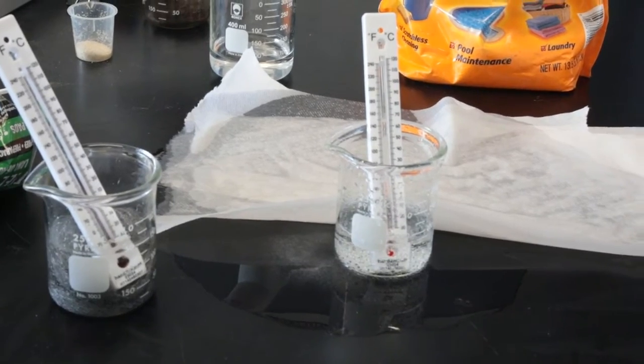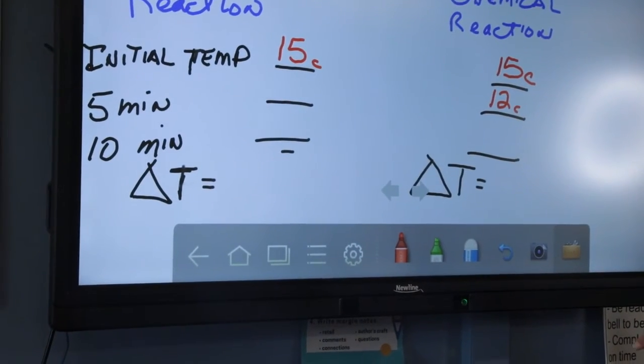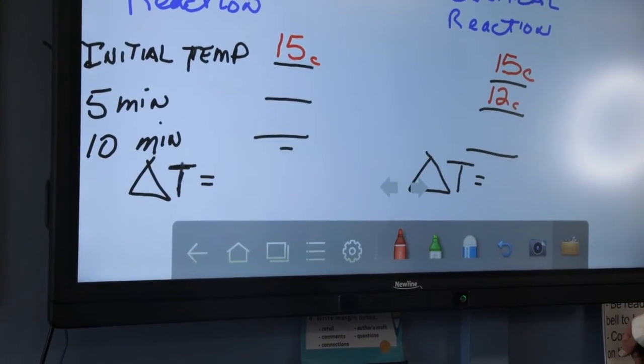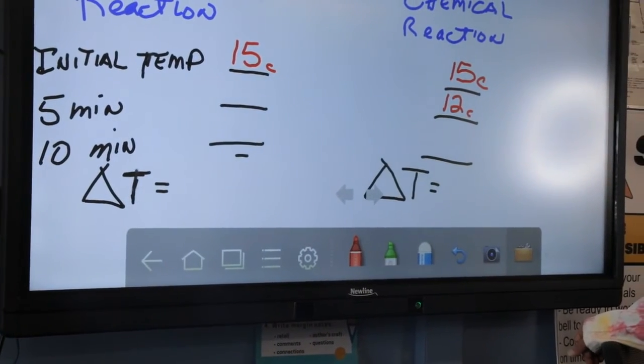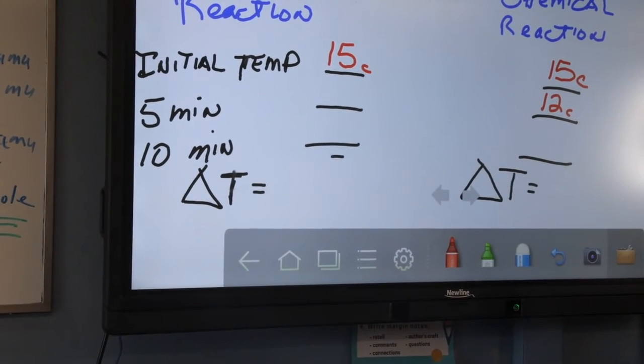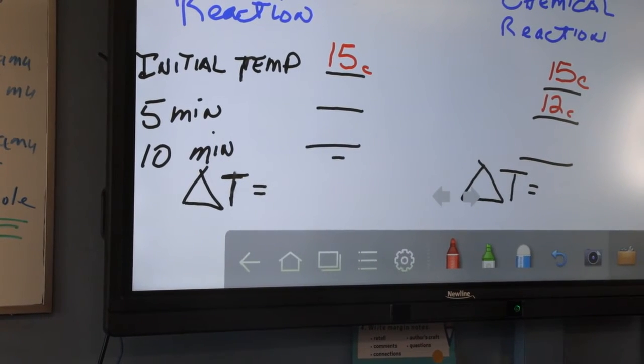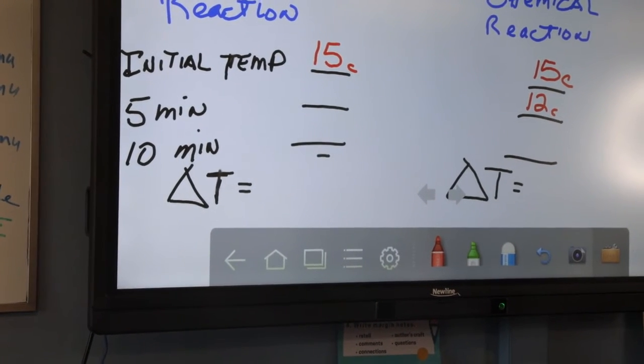David, show us the delta T on the chart. Go back to the chart. You'll see that both of them, we should end up with a delta T for the endothermic reaction and a delta T for the exothermic reaction. Delta T is the fancy science words for change in temperature. You got it?